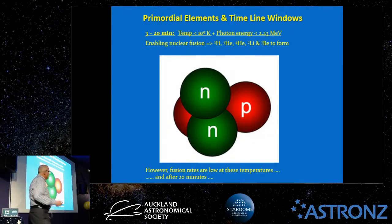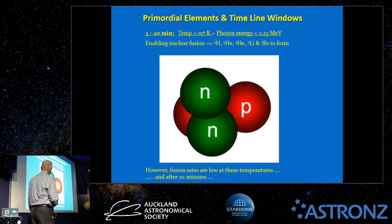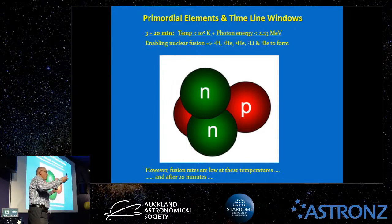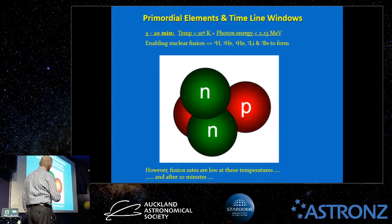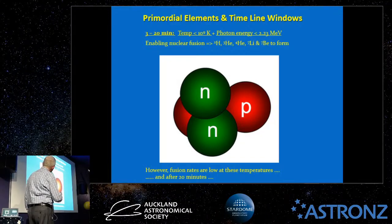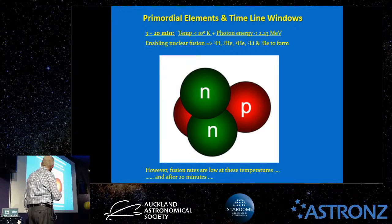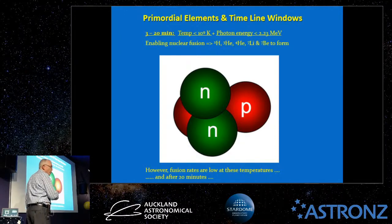After about 300 seconds — from roughly 3 to 20 minutes — the temperature dropped further and the photon energy fell below 2.23 mega-electron-volts, allowing nuclear fusion to proceed. A proton and neutron (deuterium) could hook up, helium-3 and helium-4 could form, and you started getting lithium (3 protons) and beryllium (4 protons) — small, light nuclei beginning to appear because the photon energy had dropped enough to allow them to bond.